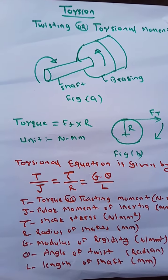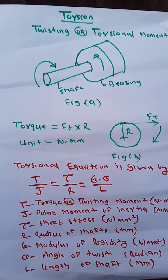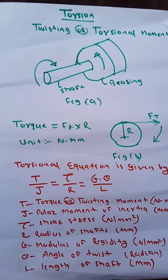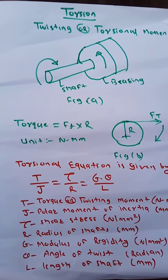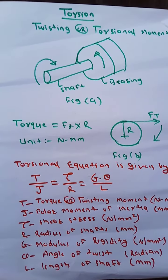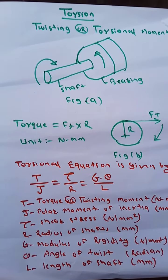At the same time, the bearing will try to oppose its motion in opposite direction. In doing so, the twisting or torsional moment is developed in the shaft.